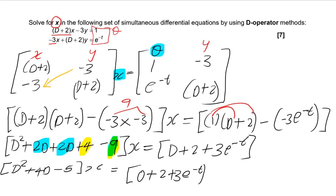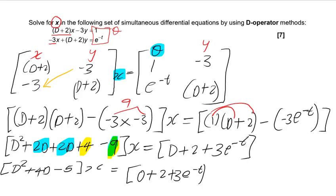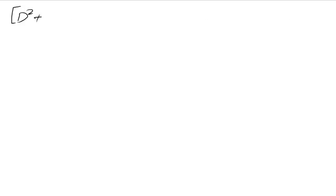So writing everything out, you have D² + 4D − 5 times x equals 2 + 3e^(−t). This is now in the standard operator format.